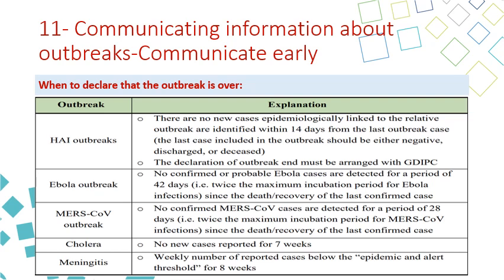This slide explains outbreak declaration and when to declare an outbreak is over, covering hospital-acquired infections, Ebola, MERS-CoV, cholera, and meningitis. For hospital-acquired infection outbreaks, declare the outbreak over when no new cases epidemiologically linked to the relevant outbreak are identified within 14 days of the last outbreak case. The last case included in the outbreak should be either negative, discharged, or deceased. The declaration of outbreak end must be arranged with the GDIPC team. For any other diseases, refer to the outbreak management manual.